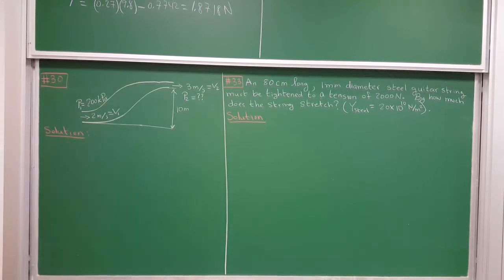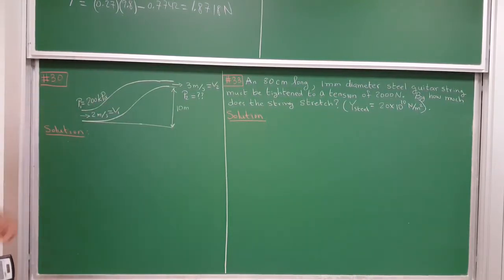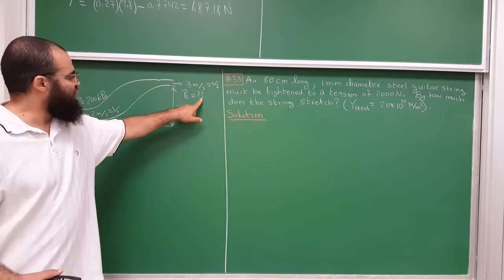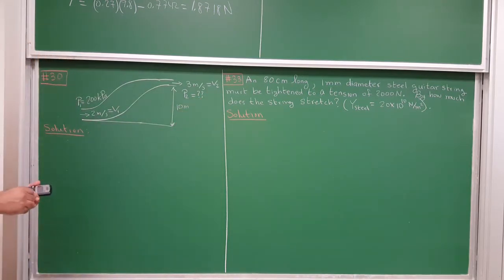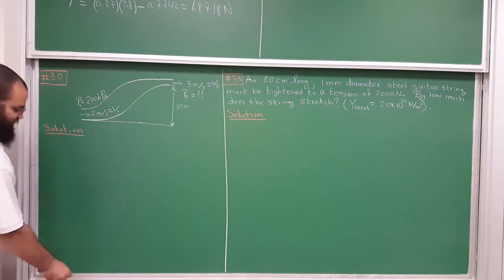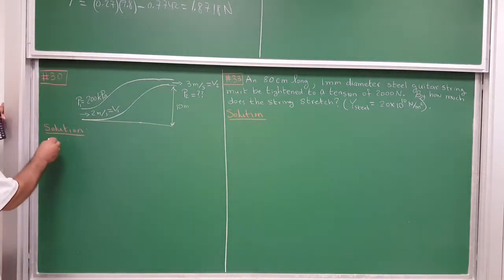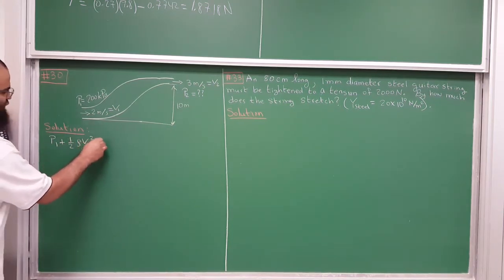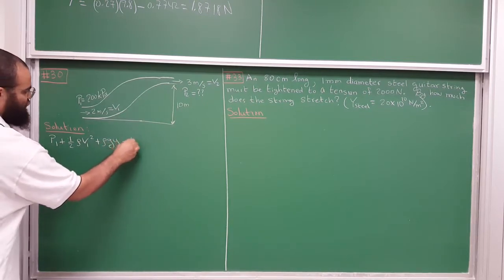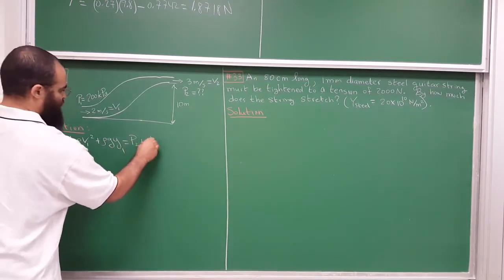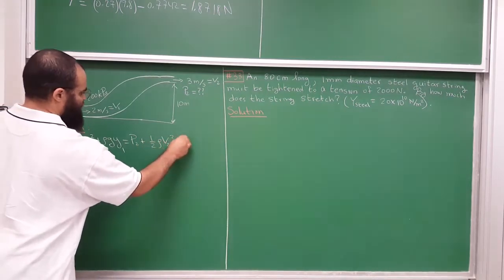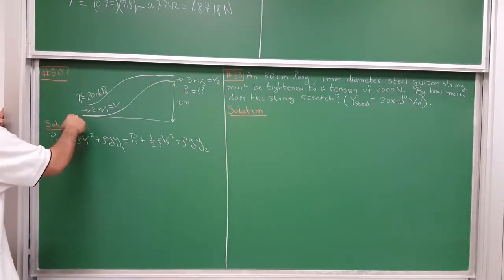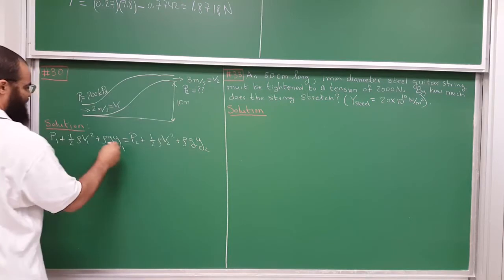Now let's look at the next problem. We're given the pressure and velocity at one point and need to find the pressure at another point — a simple application of Bernoulli's principle. Bernoulli's equation is: P₁ + ½ρv₁² + ρgy₁ = P₂ + ½ρv₂² + ρgy₂. We choose y₁ = 0 at the lower point, so y₂ = 10 meters.